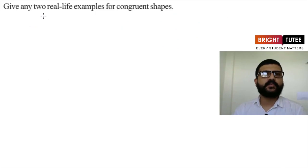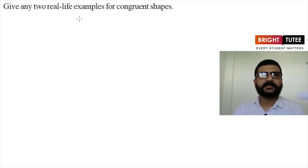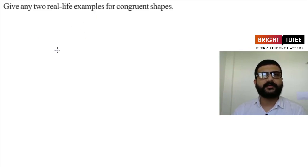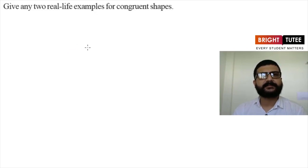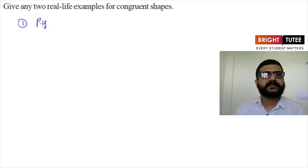The next question is: give two real-life examples for congruent shapes. You must have your maths book with you — try to observe its pages. Page one and page two are congruent. Similarly, every page of a textbook is congruent to each other, so the first example is the pages of a textbook.